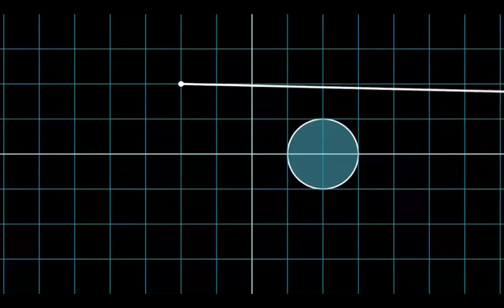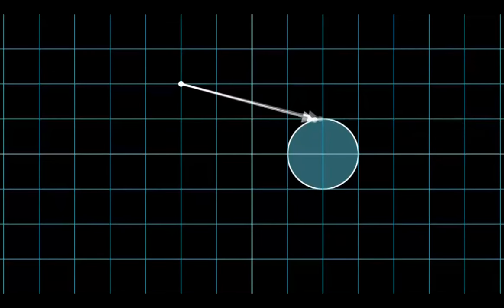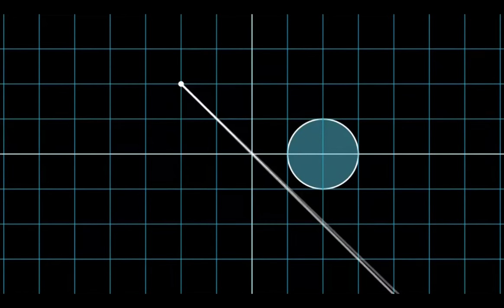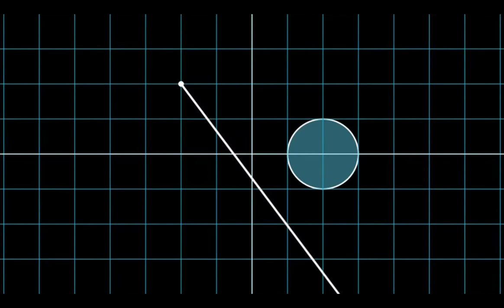You can think of a ray as a line representing a laser that gets shot out of a point until it collides with an object. This process of casting a ray from a point in a direction and calculating where the ray collides is called a raycast algorithm.